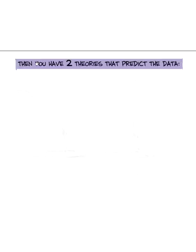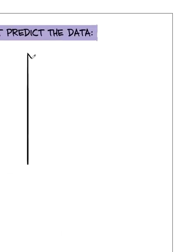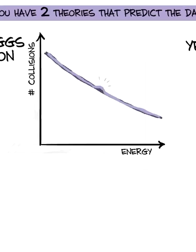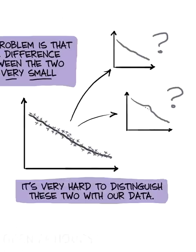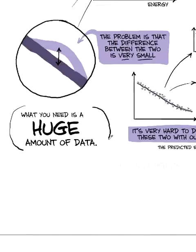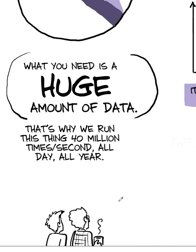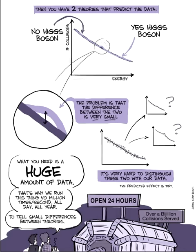And then you have two theories, right, that predict the data. One says, well I'm going to predict there's no Higgs boson, so the data should fall along this line. And the other is I'm going to predict that plus a Higgs boson. And the problem is, the difference between these two theories is very small. And so it's very hard to distinguish these two with our data. Because the predicted effect is tiny, right? If the predicted effect were huge, it would be very easy to tell the difference between with Higgs boson or not with Higgs boson. But the predicted effect is tiny, and so it's really hard to see. What you need is a huge amount of data. You need to take a bajillion collisions before you can see the difference. That's why we run this thing 40 million times a second, all day, all year. To get a lot of collisions to tell small differences between theories.